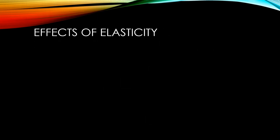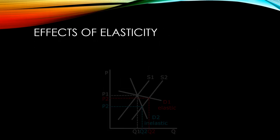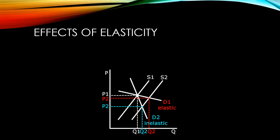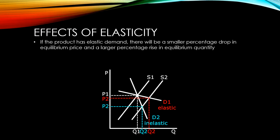The elasticity of demand for a product will make a big difference to the type of effects we see when there's an increase in competition. For a product with elastic demand, there will be a small percentage drop in equilibrium price but a larger percentage rise in equilibrium quantity.